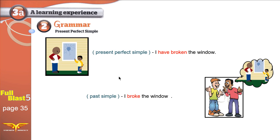Now I will clarify. This action happened in the past, and this action happened in the past. The difference is that this action stopped recently — it recently ended and it still has an influence on the present, it still has an effect on our present. In this picture, the action is no longer important — it happened a long time ago.